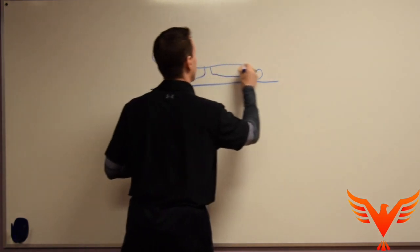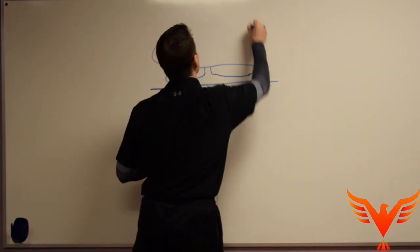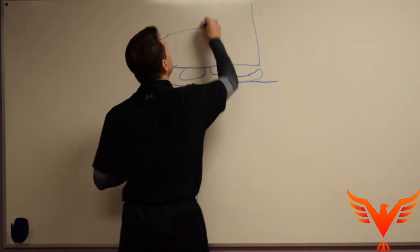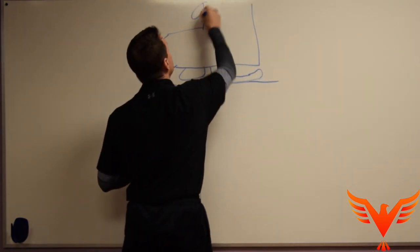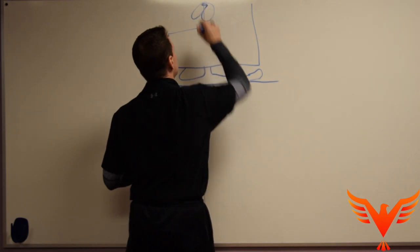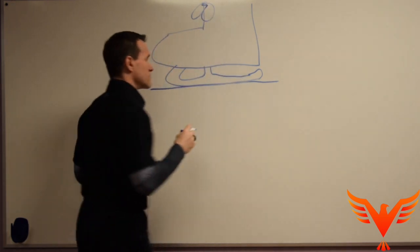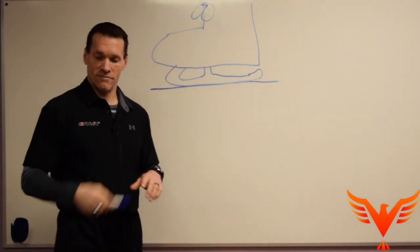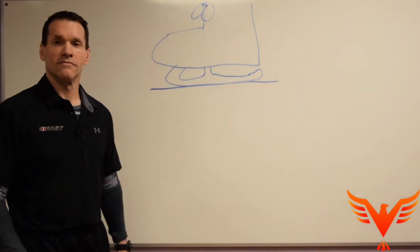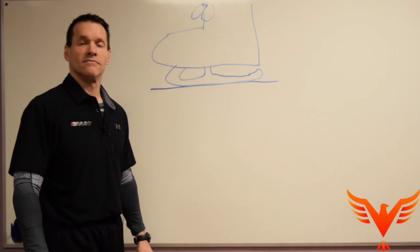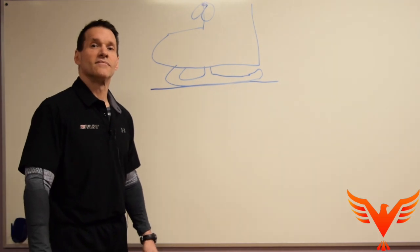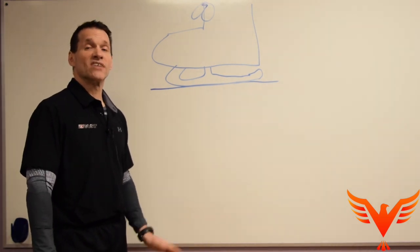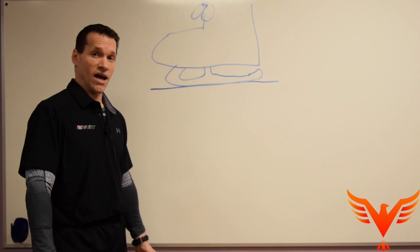So how do ice skates work, and why does that matter? They create a thin layer of water — they melt it. Snowboards do too, and that's what they're actually gliding over.